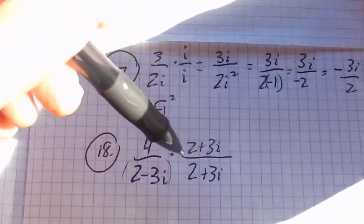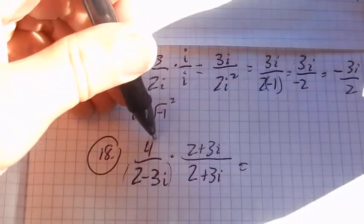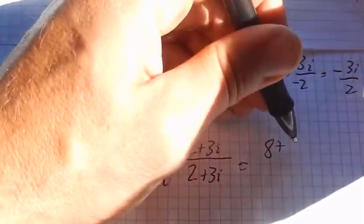And, notice I'm multiplying by 1. And so when I do that, on the bottom, I have 4 times 2 is 8. 4 times 3i is 12i.